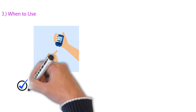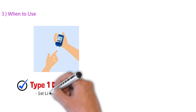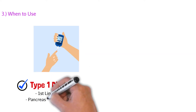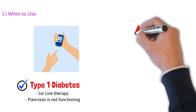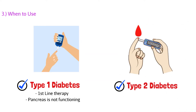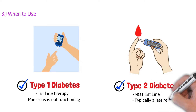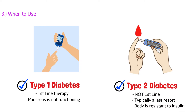So when would we use insulin? We use it in our type 1 diabetic patients, and it's the first line of therapy for type 1. If a patient has type 1 diabetes, their pancreas is not functioning and not delivering insulin to the bloodstream, so we have to give insulin. We can also use insulin for type 2 diabetes, but this is different — it is not first line. For type 2 diabetics, insulin is your last line of defense because the body is resistant to insulin, so we have other options before getting to insulin.